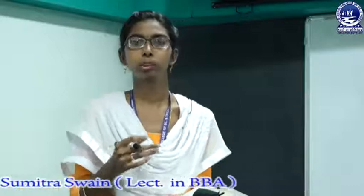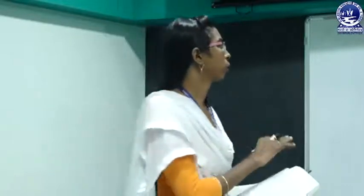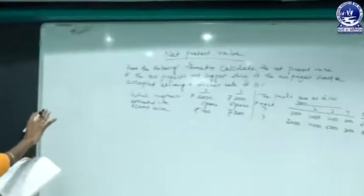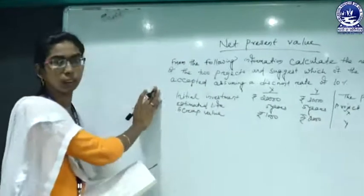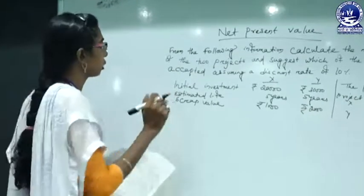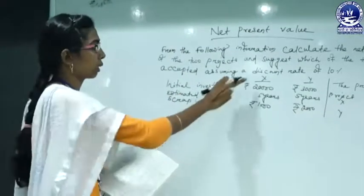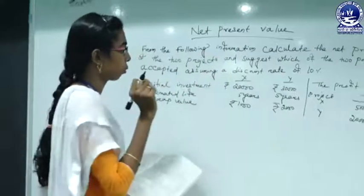In the NPV method, we calculate the present value of all future cash inflows discounted to the present date, and then determine whether a project should be accepted or not. Let's look at an example to explain the method. The question says there are two projects: Project X and Project Y.